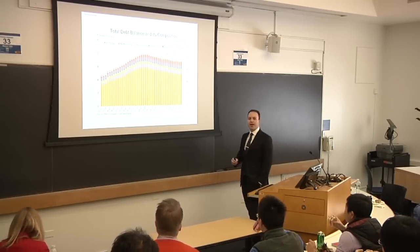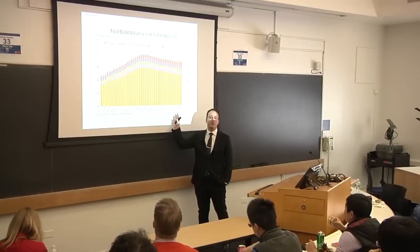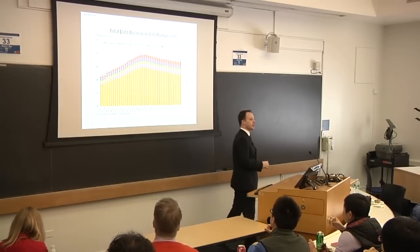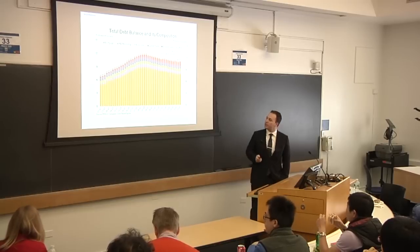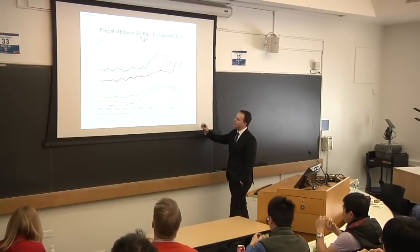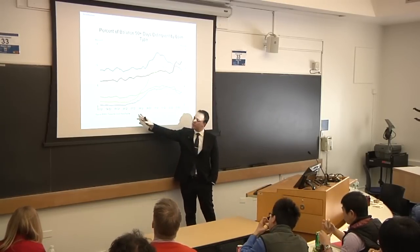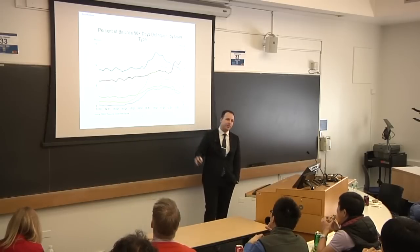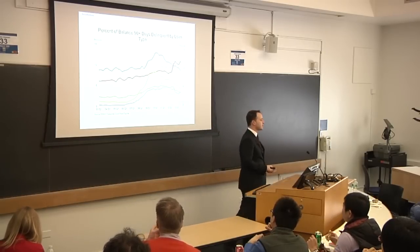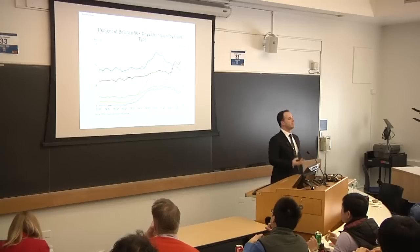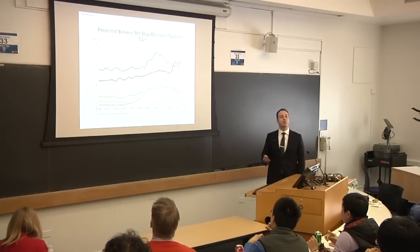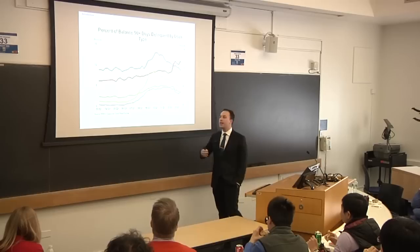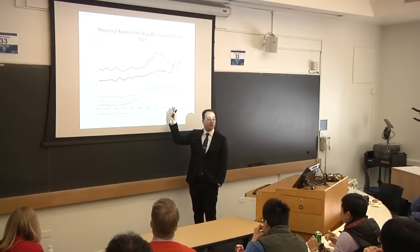Everything would be fine if this increase in household debt was not followed by an increase in delinquency when the financial crisis and recession started. If we look at the delinquency by type of credit, we see that those rates start increasing in 2007, and in particular the most significant ones are mortgage and credit cards. It seems that households became, during the boom, more fragile to any potential shock — for example to lower income — and they started defaulting on all this debt.